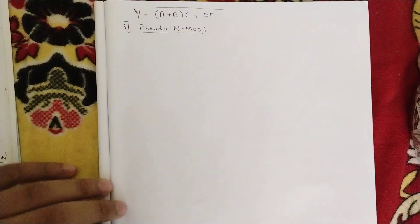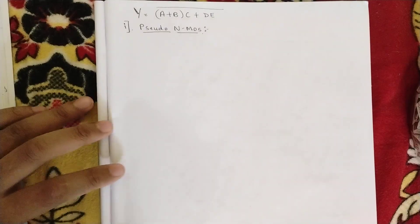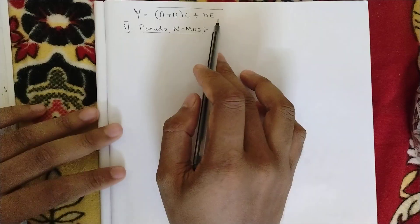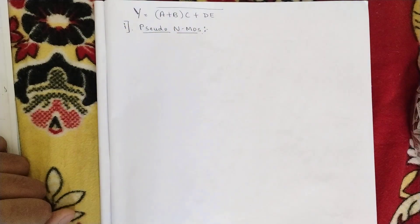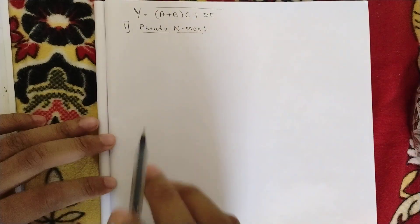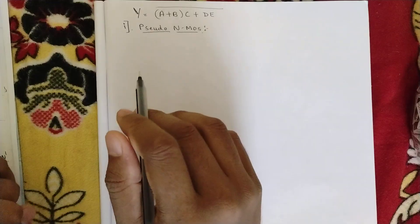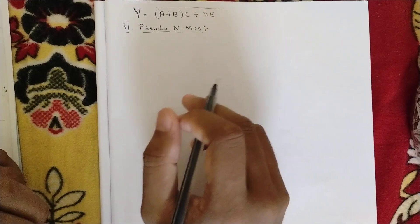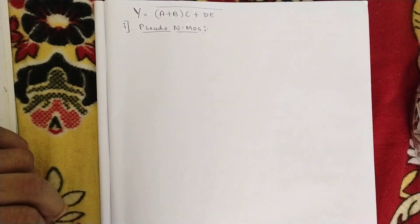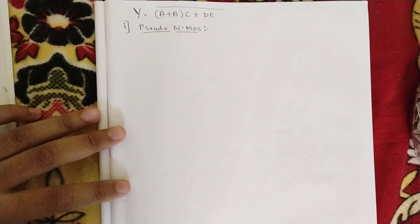Hello everyone, welcome to this new video. In this video we have an expression that is y = (a+b)·(c+d). For this expression I am going to draw the logical CMOS circuit designs using pseudo NMOS logic, then dynamic CMOS, then C²MOS logic, and CVSL logic. Using these four logics, let us try to draw the circuit diagrams.